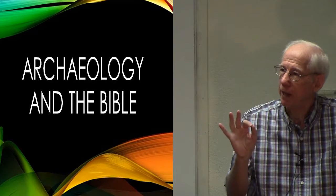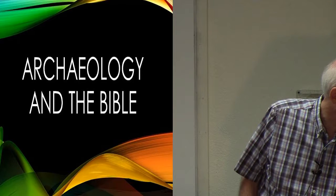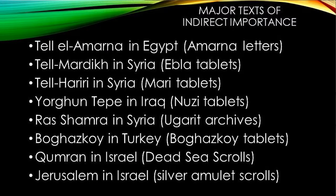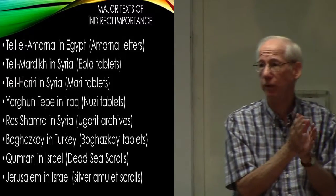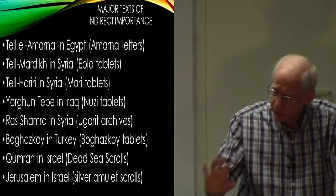My focus in the class is going to be on archaeological finds that have more direct significance. Here are some major texts of indirect importance for biblical studies: the Amarna letters from Tel El-Amarna in Egypt, the Ebla tablets from Tel Mardik in Syria, the Mari tablets from Tel Hariri in Syria, the Nuzi tablets from Jorgen Tepi in Iraq, the Ugarit archives from Ras Shamra in Syria, the Bogasköy tablets from Turkey, the Dead Sea Scrolls from Qumran in Israel, and the silver amulet scrolls from Jerusalem — which predate the Dead Sea Scrolls by hundreds of years.